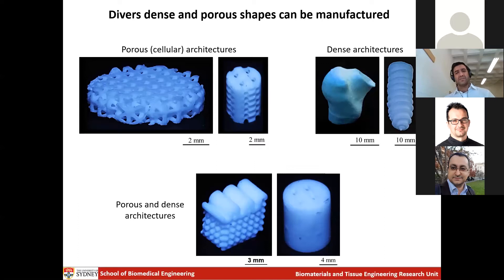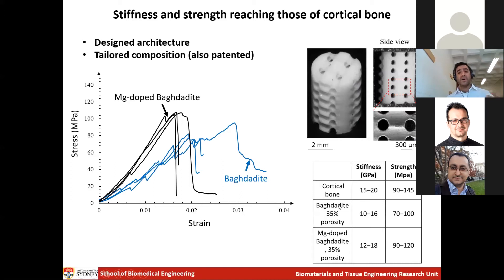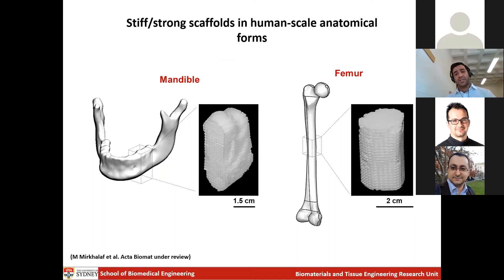Because we have full control over the architecture, guided by finite element simulations, we could print internal architectures designed to decrease internal stresses within the material. We were also not limited in terms of composition, so we could optimize the ceramic composition to improve the mechanical properties of the base ceramic. That's why we could make bioceramic scaffolds with 35% porosity that reach the stiffness and strength of cortical bone. The composition is also patented, and scaffolds can be made in anatomical size and shape, opening a pathway towards clinical translation.